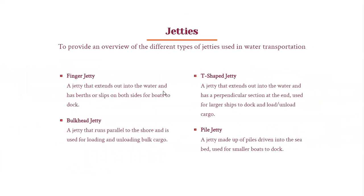Jetties play very important roles in water transportation. Types of jetties: finger jetties extend out into the water and have berths or slips on both sides for boats to dock. Bulkhead jetties run parallel to the shore and are used for loading and unloading bulk cargo. T-shaped jetties extend out into the water with a perpendicular section at the end, used for longer ships to dock and unload cargo. Pile jetties are made up of piles driven into the seabed, used for smaller boats.